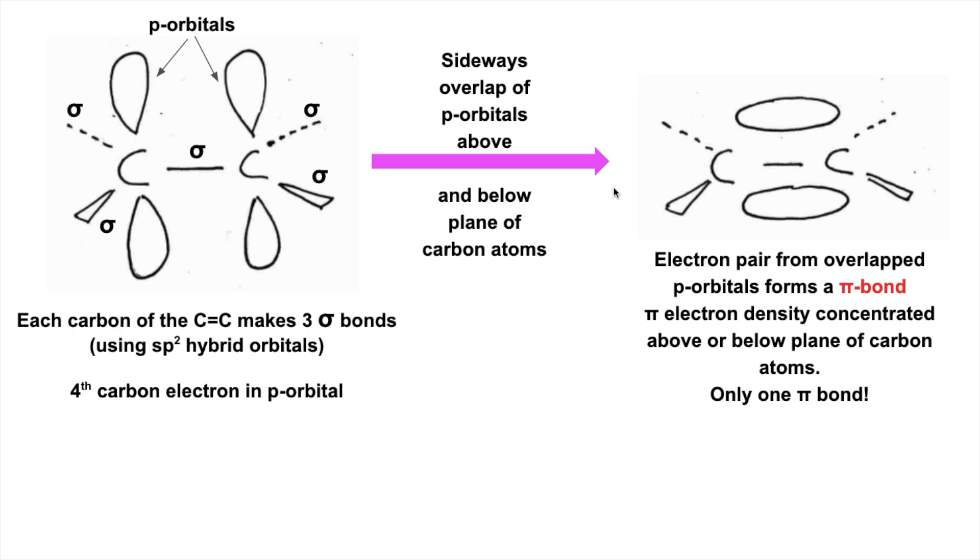The thing to remember is this diagram could be potentially misleading because it looks like there's two pi bonds. There's actually only one because there's only one pair of electrons involved.